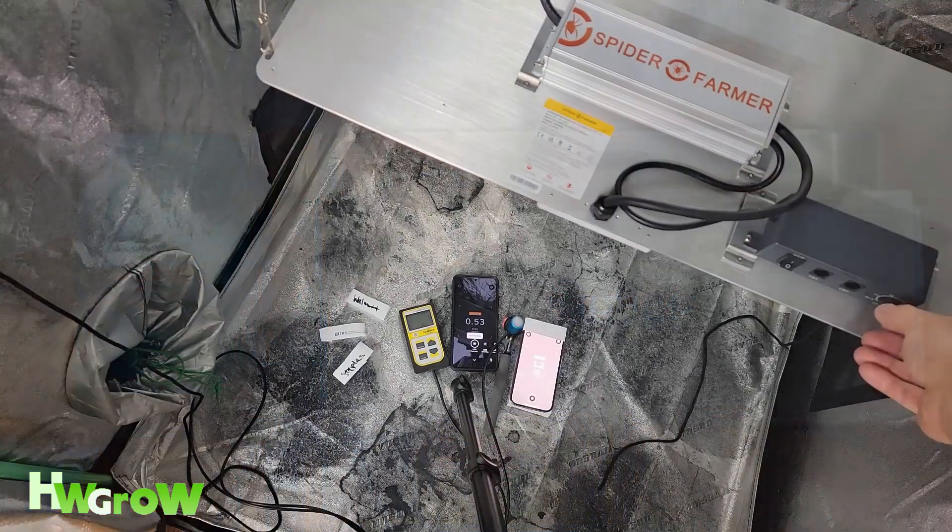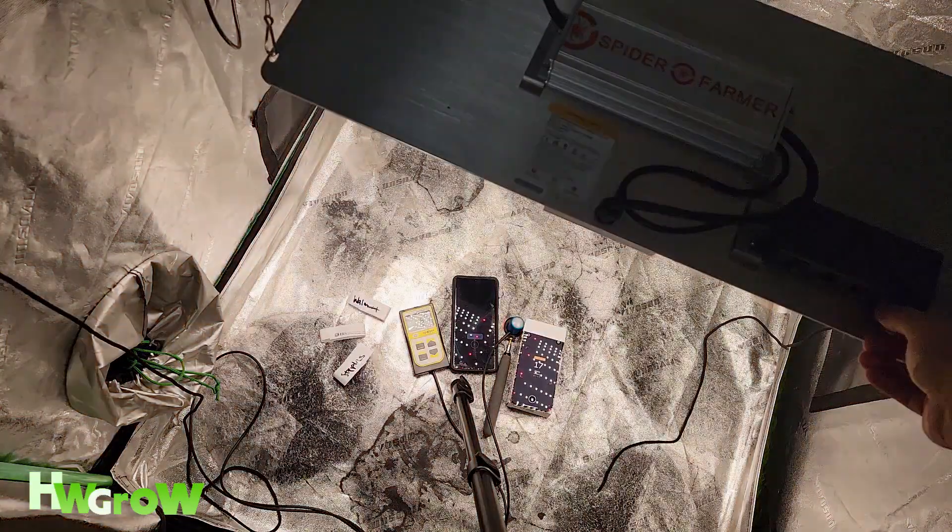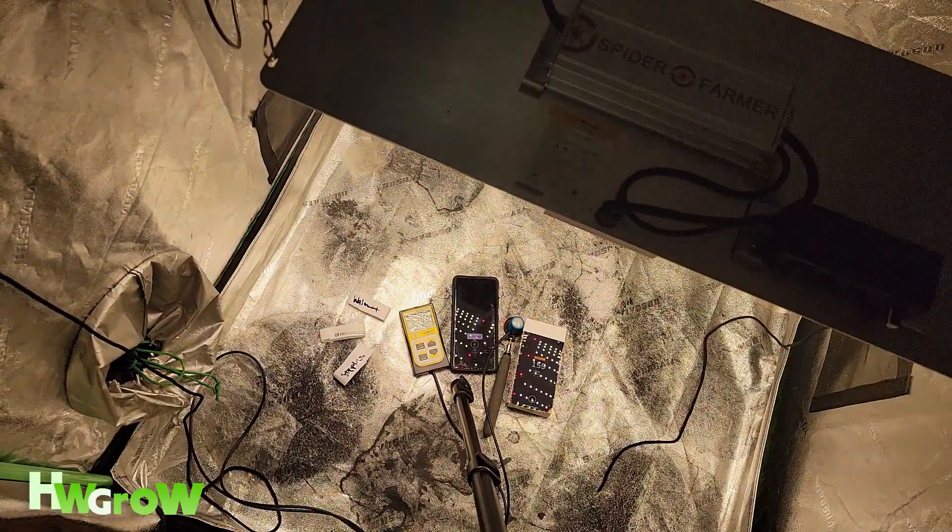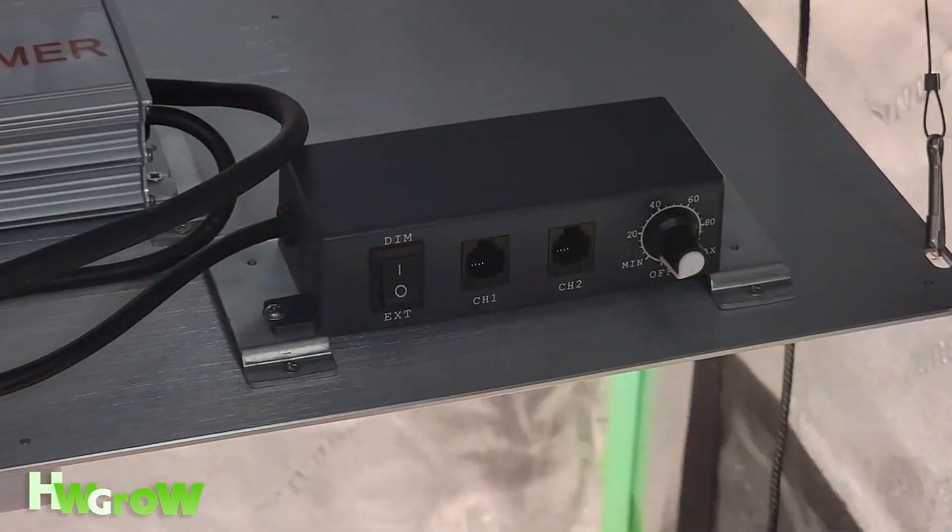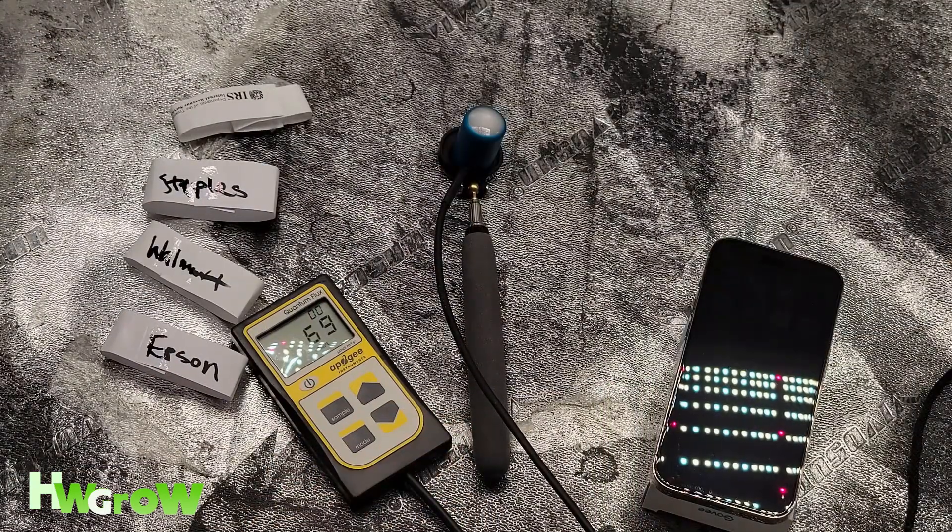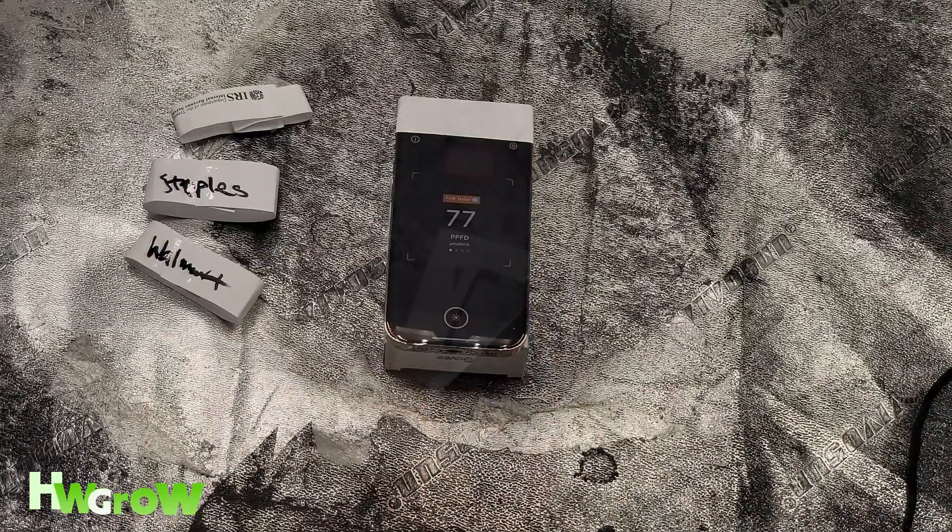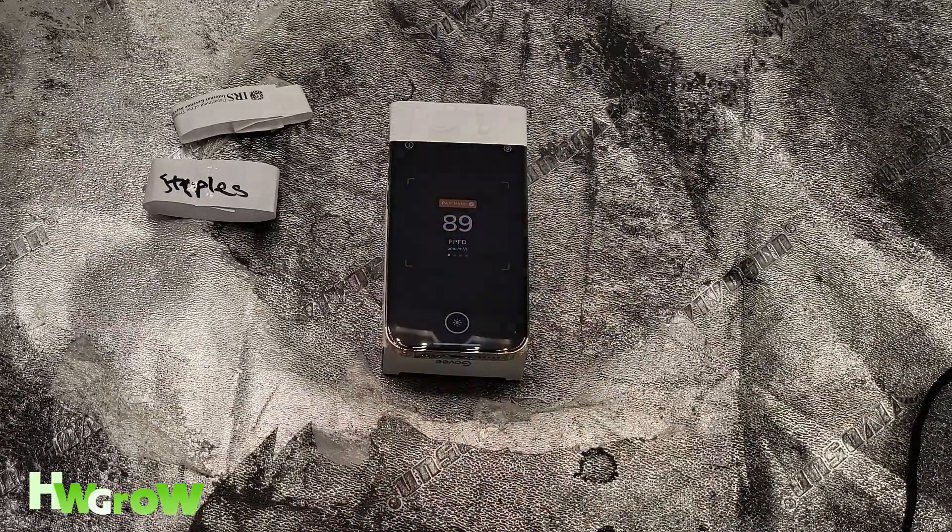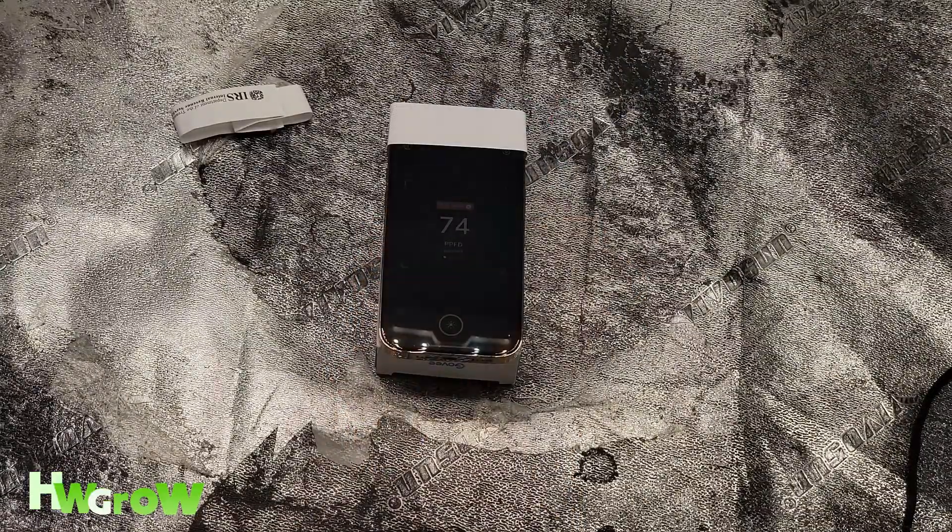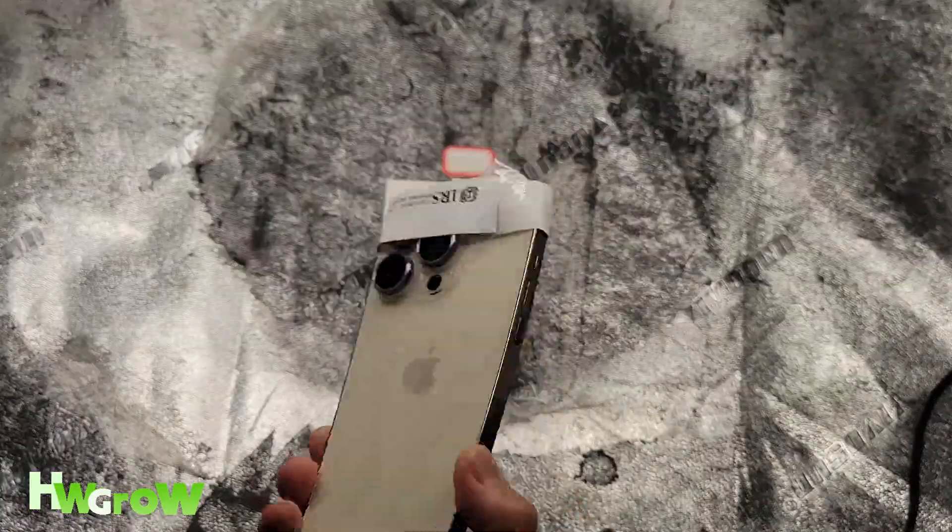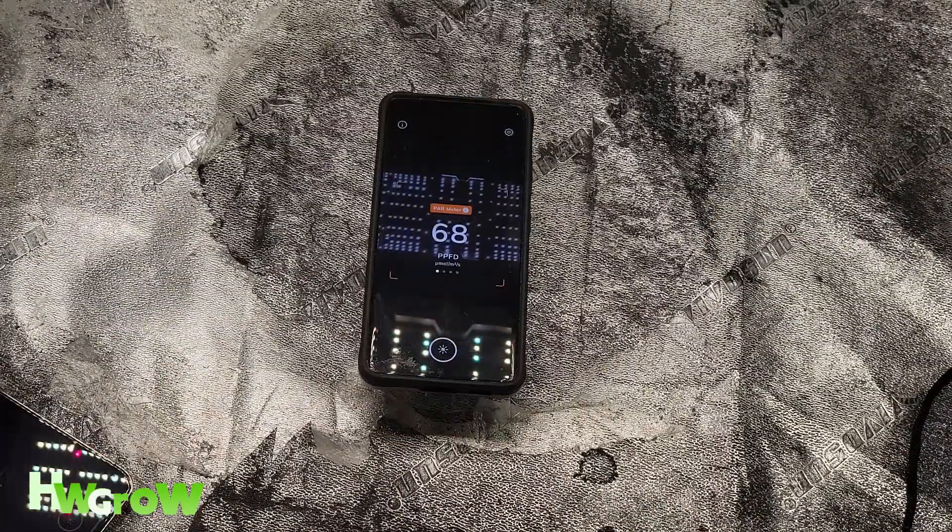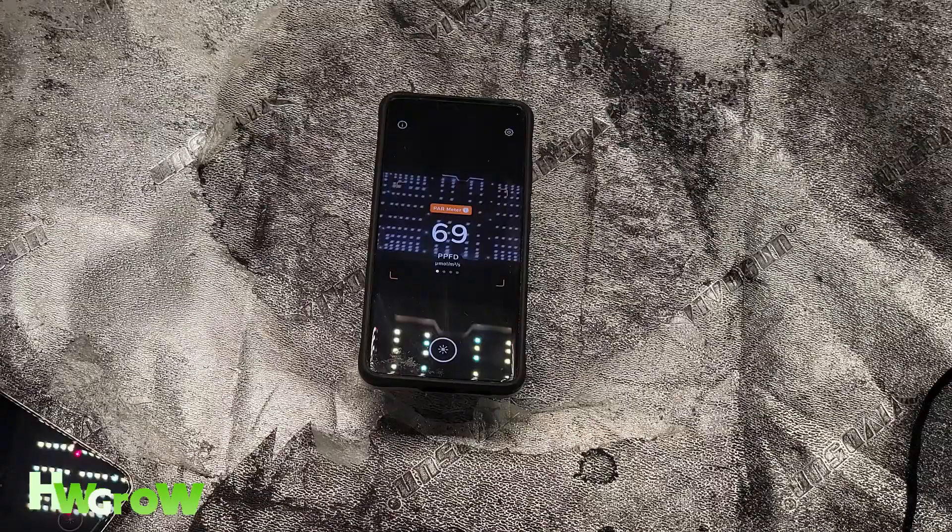A set of measurements was taken at minimal power, 50% power, and 100% power. So here's the readings for the minimal. The Apogee, 69 PPFD, Epson, 77 PPFD, Walmart, 89, Staples, 74, IRS, 108, and S22 Ultra, 69.